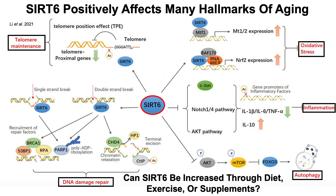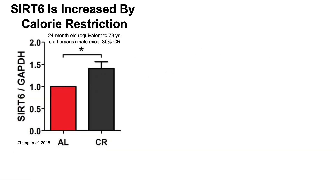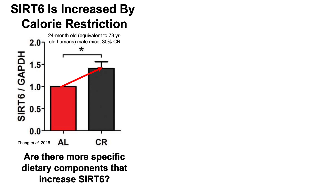Can SIRT6 be increased through diet, exercise, or supplements? First, SIRT6 is increased by calorie restriction — this was shown in male mice. Looking at SIRT6 protein levels on the y-axis normalized to the loading control GAPDH, mice fed 30% fewer calories (these were 24-month-old mice, equivalent to about a 73-year-old person) showed approximately a 50% increase in SIRT6 protein levels compared with ad libitum-fed mice.